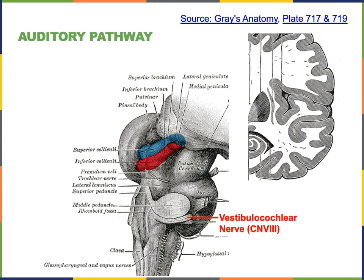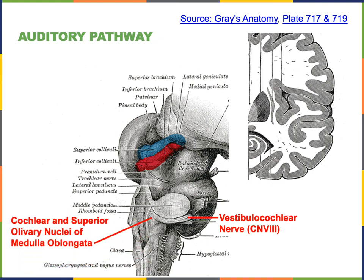These afferent neurons form synapses in the medulla oblongata, specifically in two regions: the superior olivary nucleus and the cochlear nucleus.